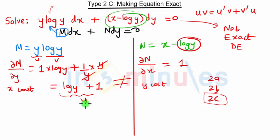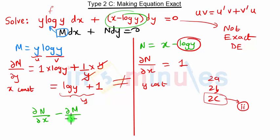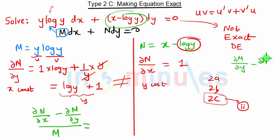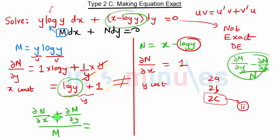In type 2c, we subtract the partial derivative of N with respect to y and the partial derivative of M with respect to y, then divide by M. In this case, since the derivative terms involve only log(y), the result should be a function of y alone.